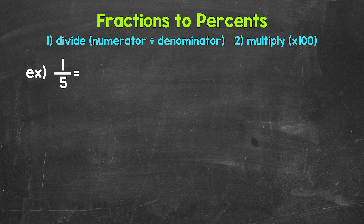When we convert a fraction to a percent, we can start by dividing the numerator, the top number of the fraction, by the denominator, the bottom number of the fraction. This will give us a decimal. Once we have that decimal, we convert it to a percent by multiplying it by 100. And a quick way to multiply by 100 is to move the decimal twice to the right.